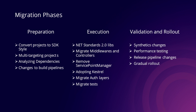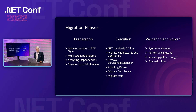The migration had three phases. The first is the preparation phase: converting projects to SDK style, multi-targeting so they can build on both .NET Framework and .NET Core, and analyzing dependencies to identify blockers. If there are blockers, you migrate those first or reach out to external teams for .NET Core library support. We also made pipeline changes to ensure .NET Core check-ins don't break, which was important to make the execution and validation easier.